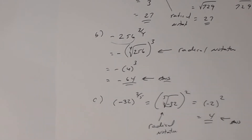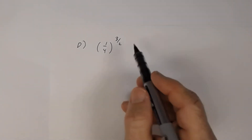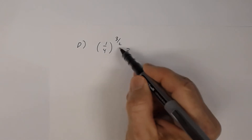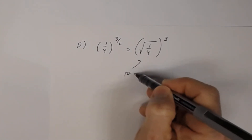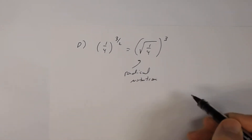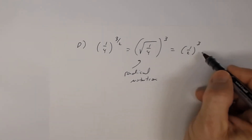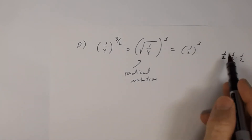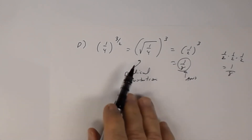Letter D: suppose we had one-fourth raised to the 3/2 power. As a radical, your index is 2, so it becomes the square root of one-fourth, all raised to the third power — that's your radical notation. The square root of one-fourth is one-half. So one-half to the third power: one-half times one-half times one-half gives one-eighth. The answer is one-eighth.